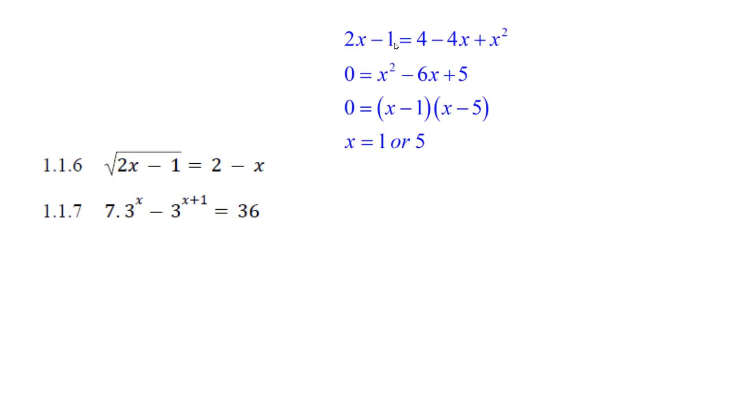When you square a square root, it turns into 2x minus 1 there. Get rid of the square root. And 2 minus x squared is, there it is, 4 minus 4x plus x squared.